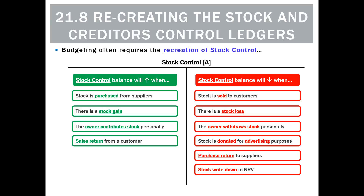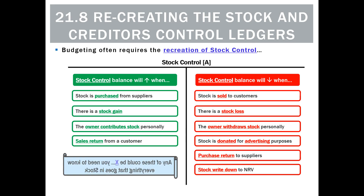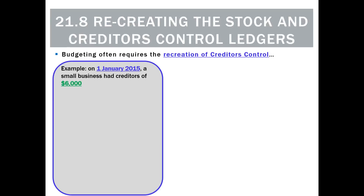One we sometimes forget is that when we write down stock to its net realizable value, a stock write-down will lower the stock control ledger. Any of these numbers could be X, so we always want to make sure we know every single number that could go in as a debit or a credit to stock control.